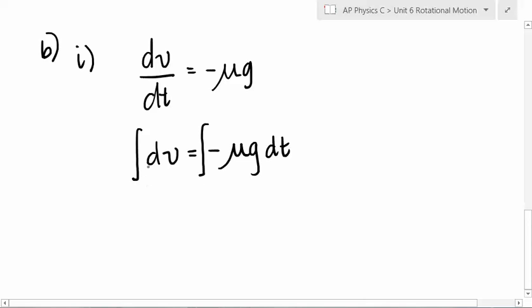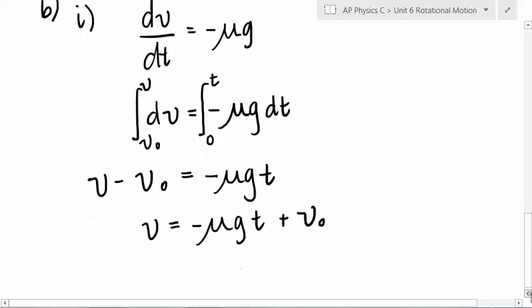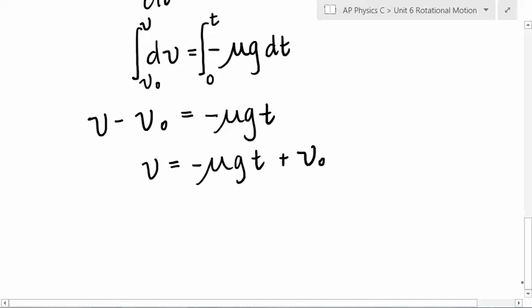So what do we want to evaluate? What do we want our limits to be? The initial velocity to some final velocity? And then the initial time, 0 to t. So then what's the integral of dv evaluated from v naught to v? V minus v naught, right? Is equal to... And then we're going to go from 0 to t. So this would be negative mu g t minus 0. So then what does v equal? Negative mu... Yeah. Does that look like v equals v naught plus a t? Holy moly.